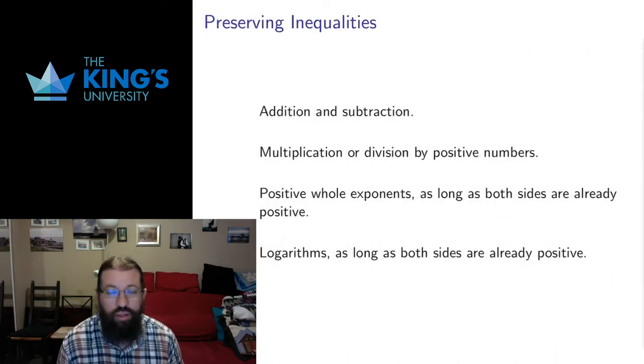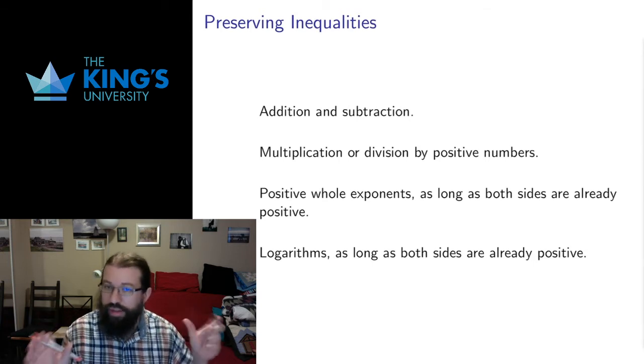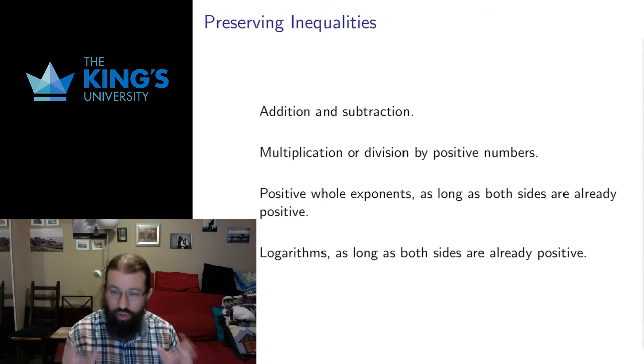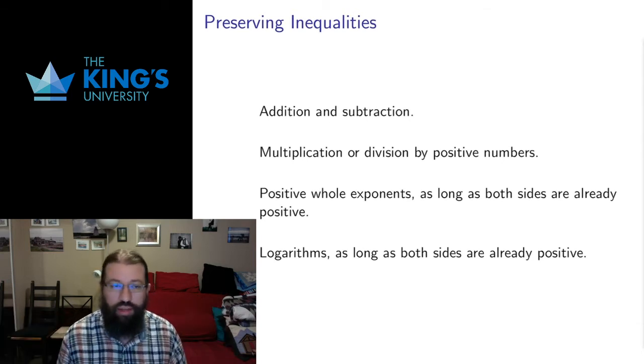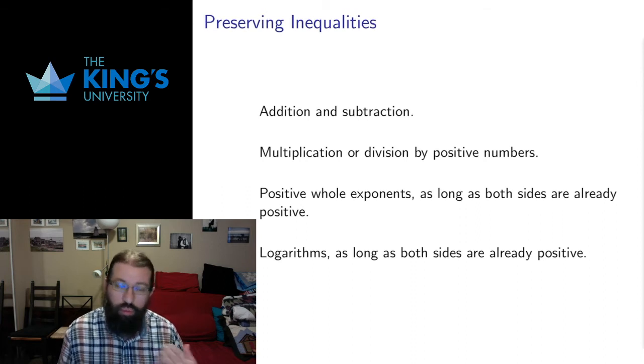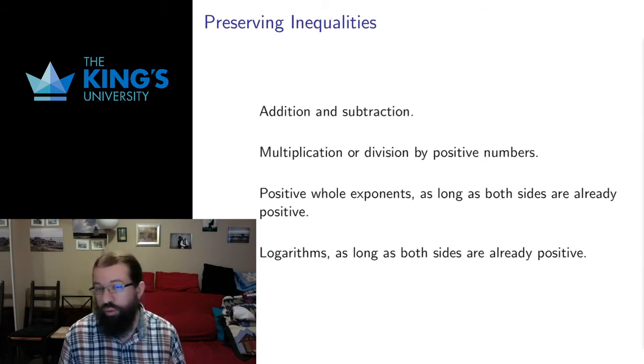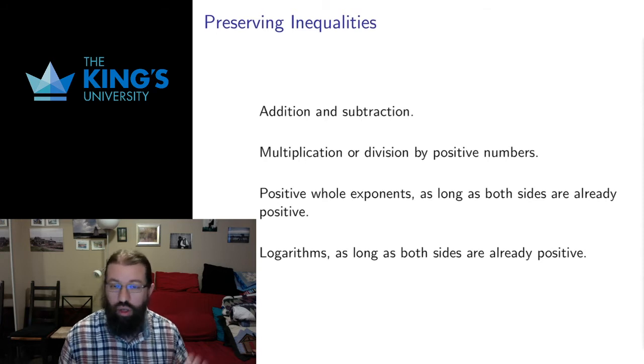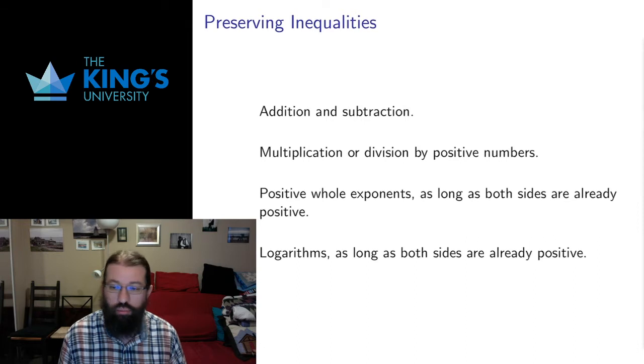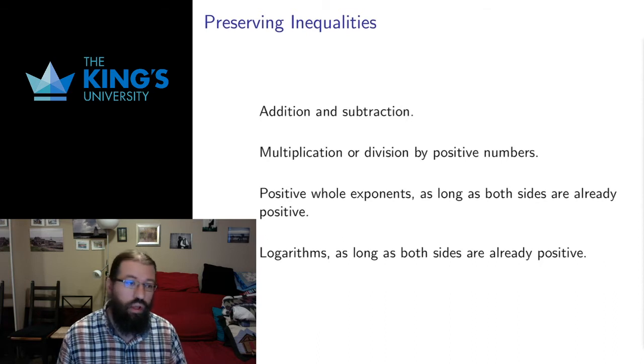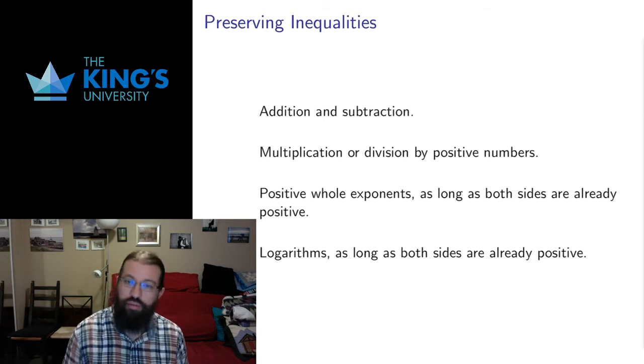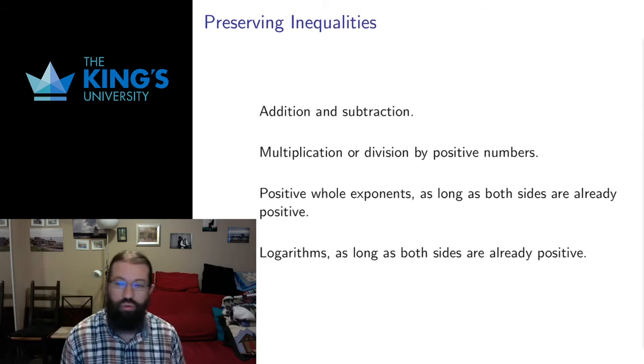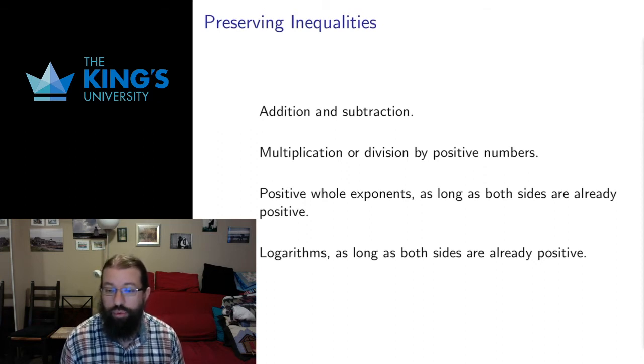When we did algebra and equality, I said that we're allowed to do anything to both sides of the equation as long as we do the same thing to both sides. And for the most part, that's how equality works. There are some subtleties we had with cancellation and division by zero that we have to be careful about, but for the most part, that is the rule. We can do whatever we want to both sides of the equation. For inequalities, it's a lot more complicated and a lot more annoying. There are only specific things we can do. We still have to do them to both sides of the inequality, but we can't just give a blanket all sorts of things work. We have to go specifically case by case and say this works, this works, this works, these ones don't.